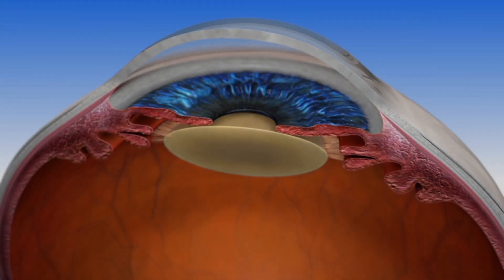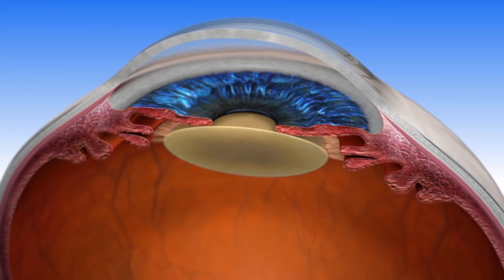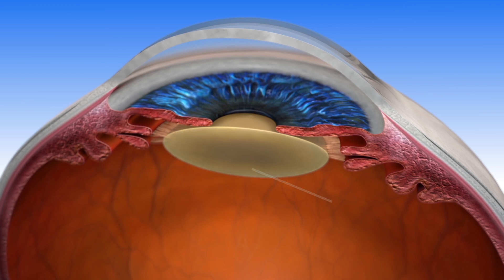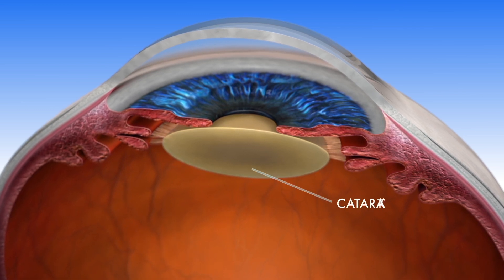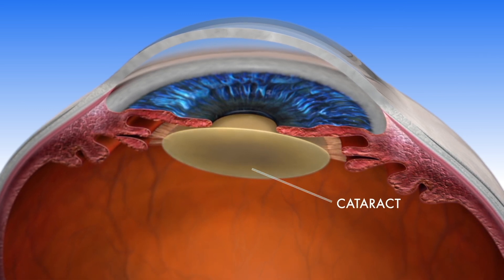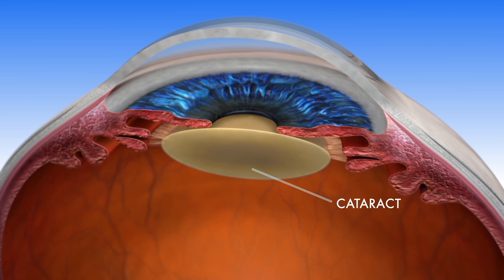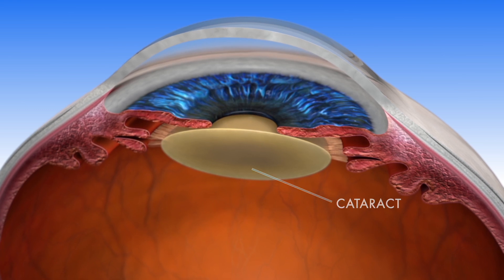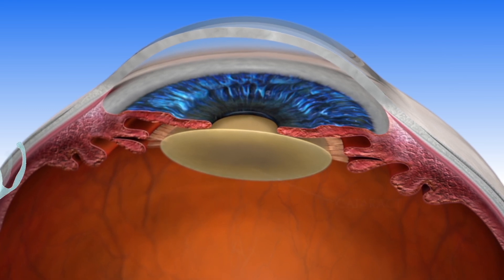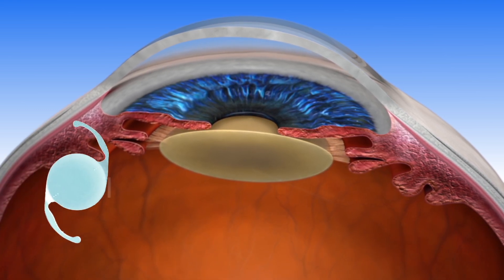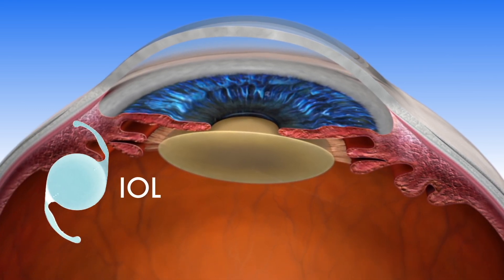As you age, the lens in your eye can become cloudy, making it harder for you to see. As part of the cataract procedure, the cloudy lens is removed and replaced with an artificial intraocular lens, or IOL.